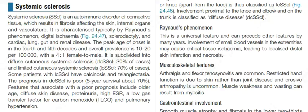The peak age of onset is in the fourth and fifth decades, and overall prevalence is 10 to 20 per 100,000, with a four to one female to male ratio. It is subdivided into diffuse cutaneous systemic sclerosis (30% of cases) and limited cutaneous systemic sclerosis (70% of cases). Some patients with limited cutaneous systemic sclerosis have calcinosis and telangiectasia.